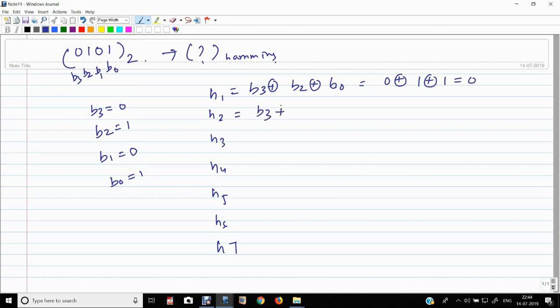Okay. So, H2 will be B3 plus B2, B1 plus B0. So, 0 plus 0 plus 1. Okay. H3, B2, it equals to 0.